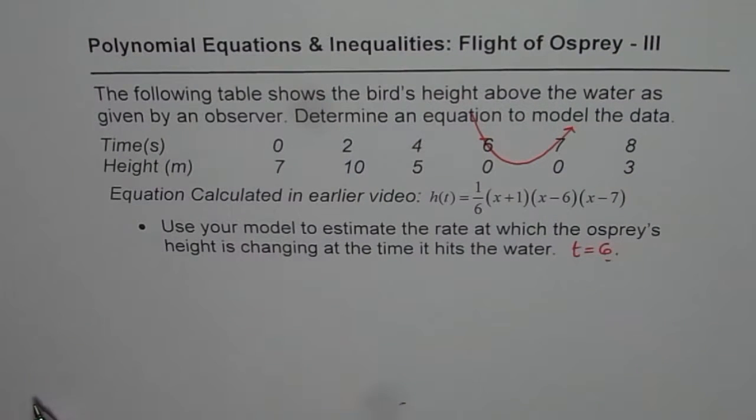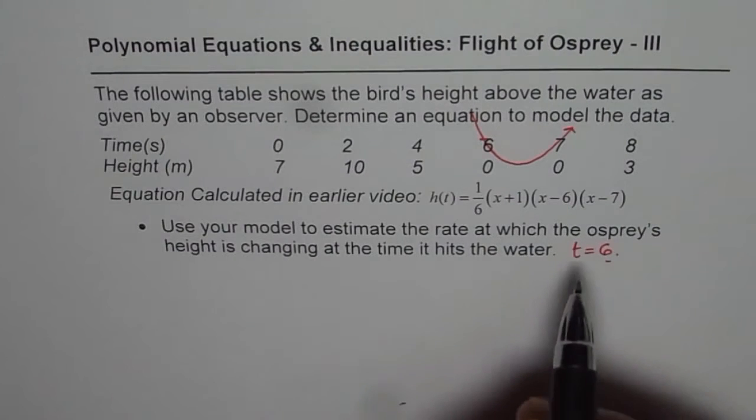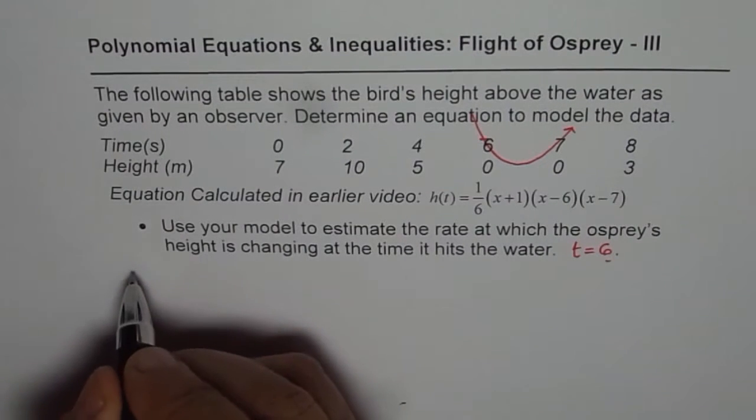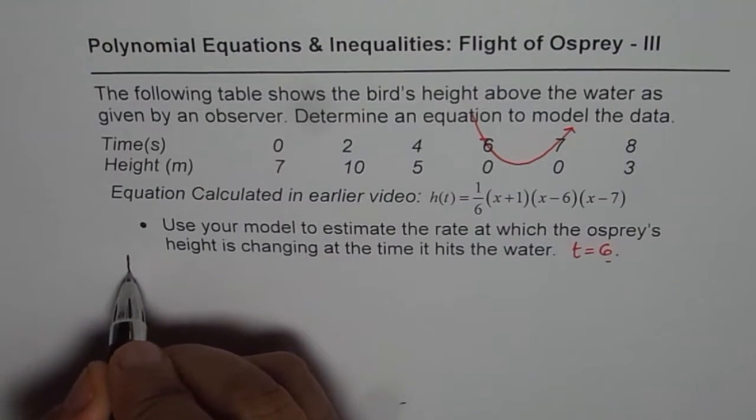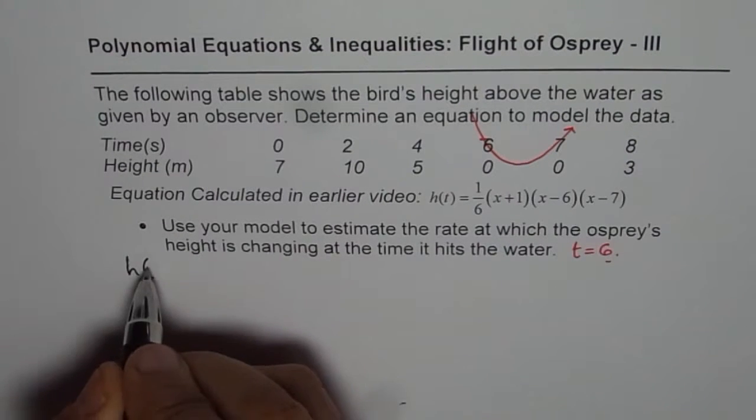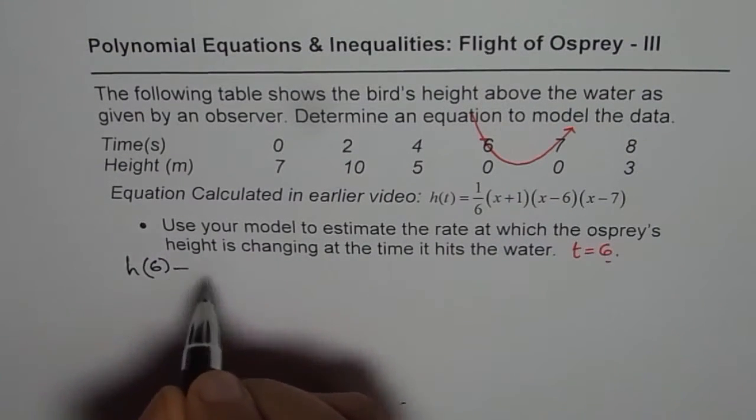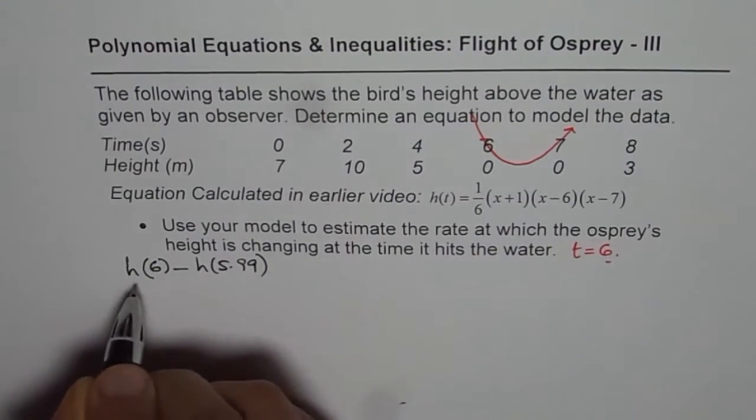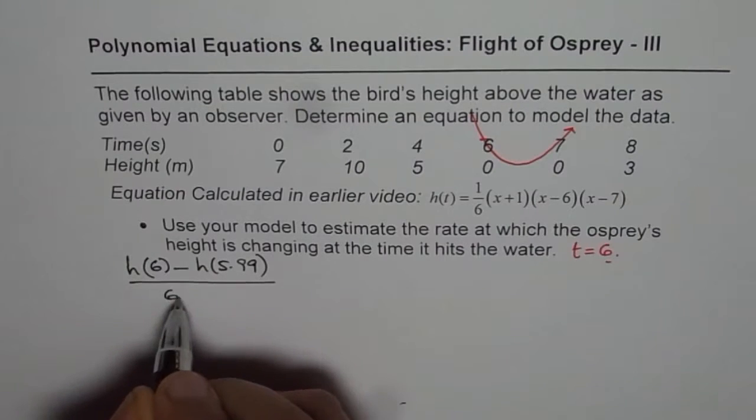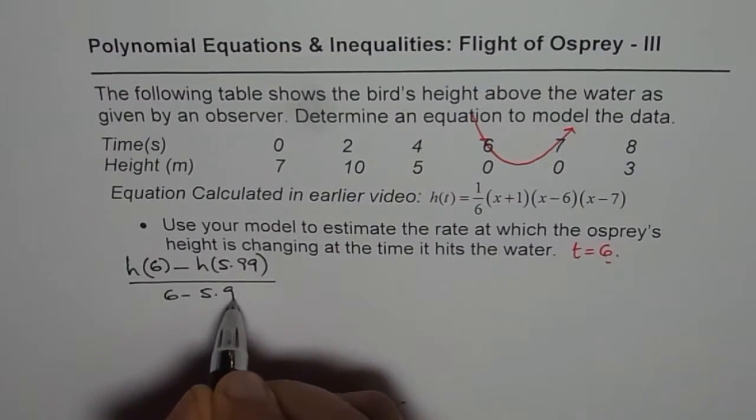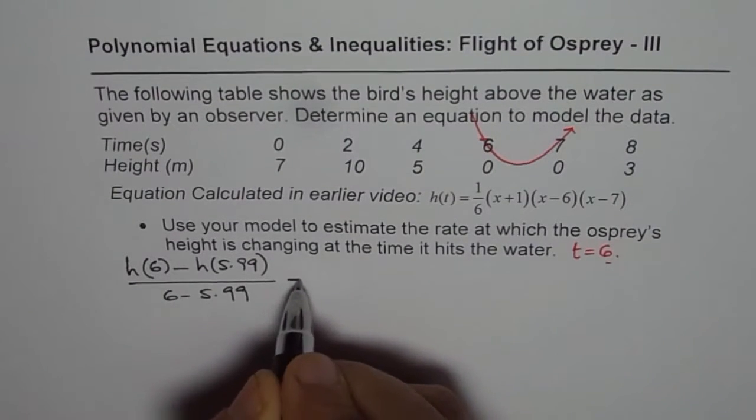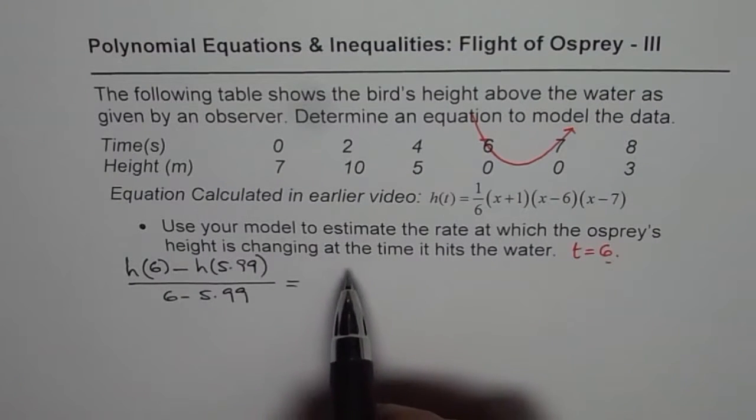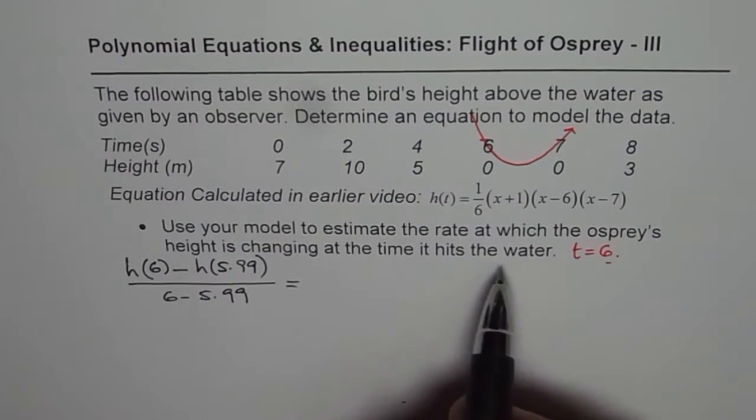So at the time when it just hits the water, we can take the preceding rate of change at this moment. That is to say, the rate of change will be [h(6) - h(5.99)] divided by [6 - 5.99], correct?